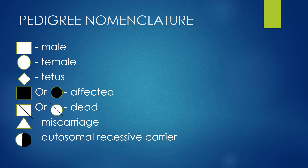In this slide we're looking at pedigree nomenclature, which will help you read and understand pedigrees as a medical student or doctor. A white square represents a healthy male — one not expressing the trait you are searching for. A white circle represents a healthy female. A diamond represents a fetus or someone of unknown sex. A dark or colored-in square or circle represents an affected male or female — a person that has the traits you are trying to find in the pedigree. A square or circle with a diagonal line through it represents people who are dead.